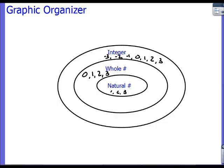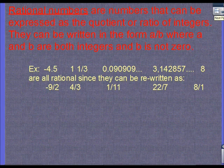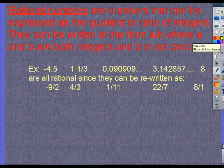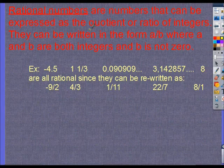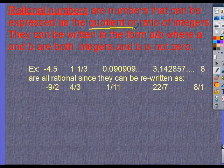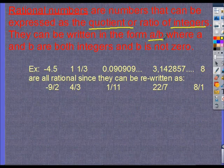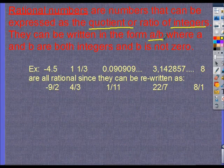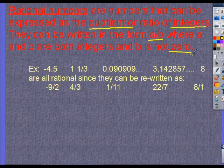So this should be new stuff now — rational numbers. A rational number is a number that can be expressed as the quotient — which just means division, basically a fraction — of integers. So it can be a fraction of positive or negative numbers written in the form A over B, where A and B are both integers and B is not zero. If the bottom number is zero, it cannot be a rational number.